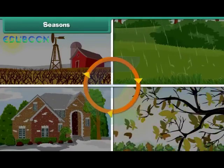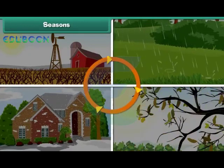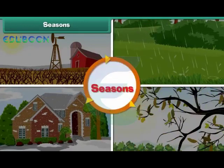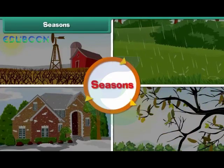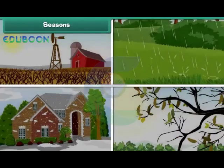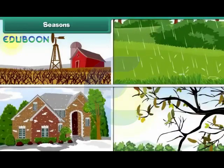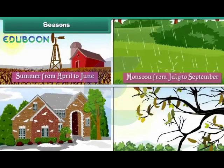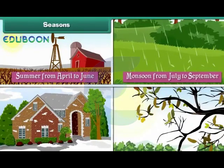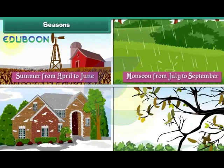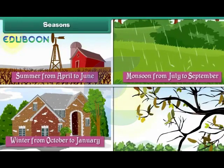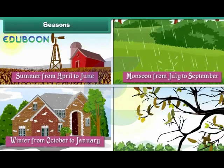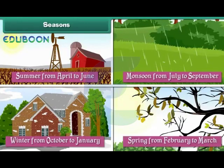The weather changes in cycles and these cycles are called seasons. There are four main seasons in a year. They are summer from April to June, monsoon from July to September, winter from October to January, and spring from February to March.